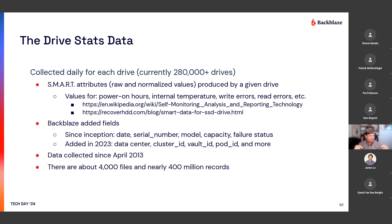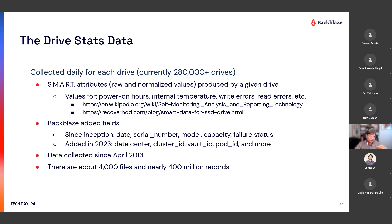We also add some data that makes perfectly good sense, like the date, the serial number, model — things that help identify the drive. And in 2023, around this time last year, we added other fields. For our purposes we added a vault and pod ID, and the location within the pod and the storage server. So you can start to understand: is a particular vault susceptible to more failure? Are there certain pods and certain locations that fail more often? Those are really interesting things to understand about your environment. You can go to our website and download this data, and many people have, as you can see from all of those different studies.